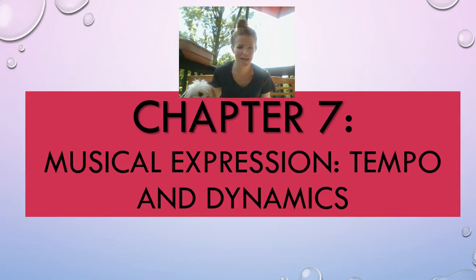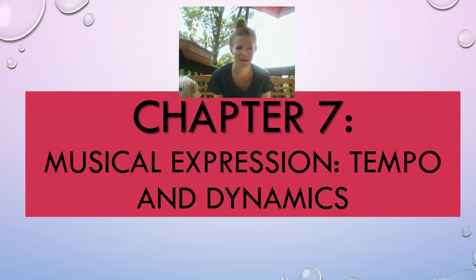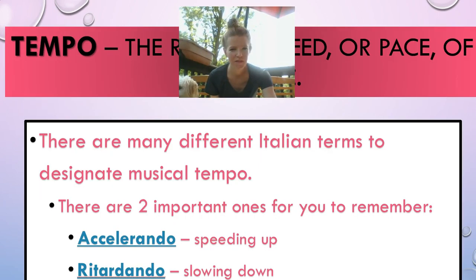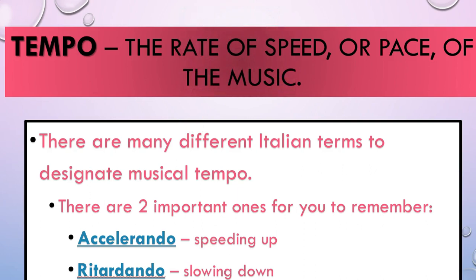Chapter 7: Musical Expression, Tempo, and Dynamics. Your textbook talks about a lot of terms, and I've narrowed them down to just a few that I think are important for you to know. The first one is tempo. When we want to talk about the speed of a song that we're listening to, whether it's fast or slow, that word is tempo. Tempo describes the rate of speed or pace of the music.